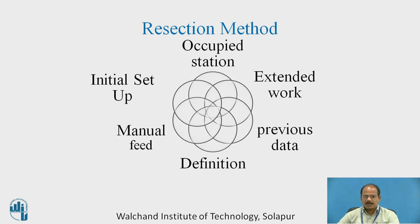What are the differences, advantages, and disadvantages between the conventional method and the resection method? In both cases we are trying to define the coordinates of the occupied station. In the initial setup, orientation is done using either a magnetic compass or the occupied-station backsight setup. There is also a manual feed of the coordinates of the occupied station — northing, easting, and altitude (zenith distance).